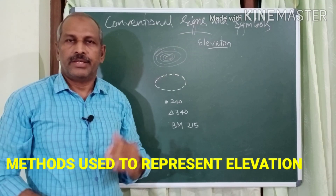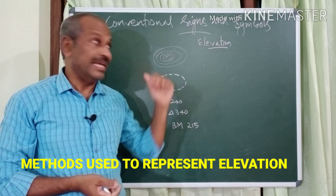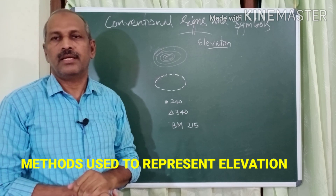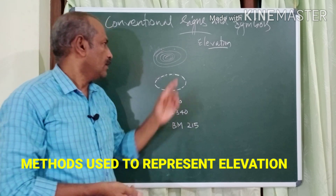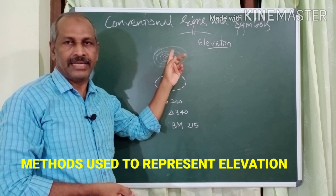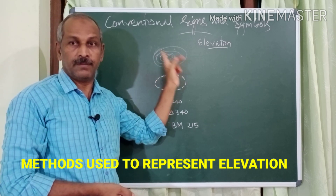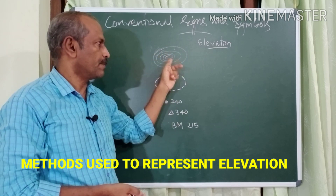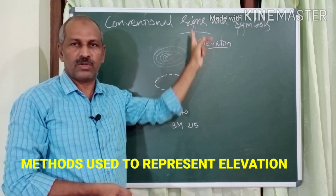Now let's see the methods by which elevations, altitude, and height are represented in the topographic map. Smooth curved lines in brown color are called contour lines, used to represent elevation or height or altitude.